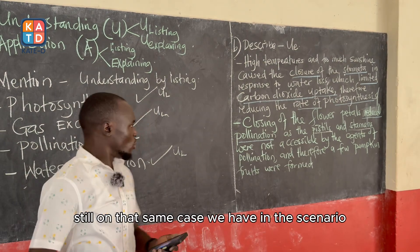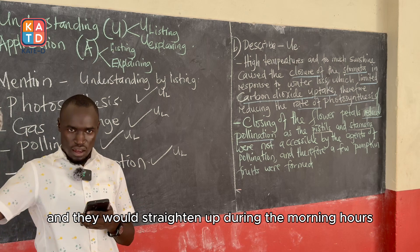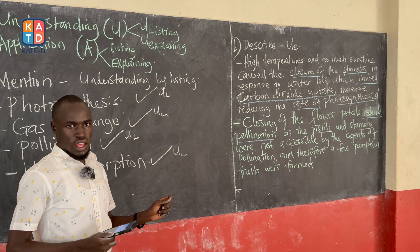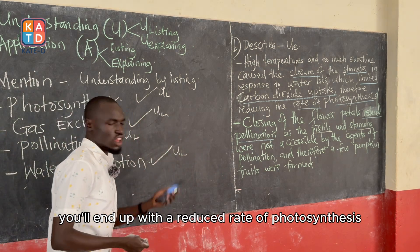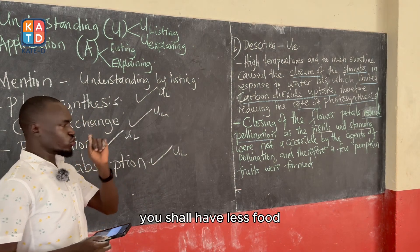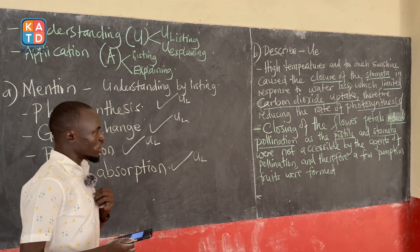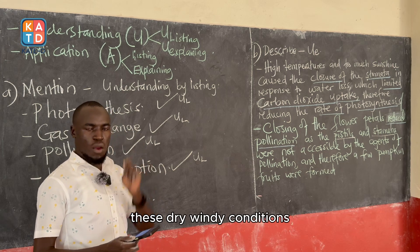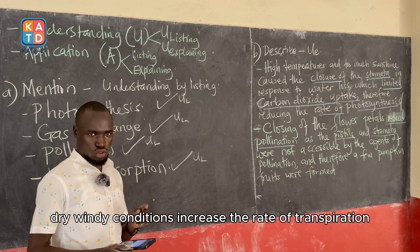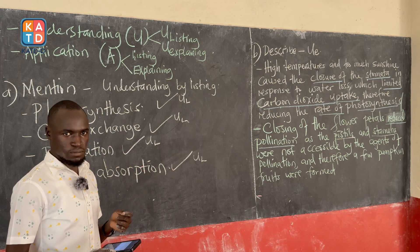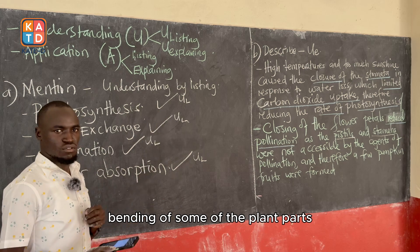They also talked about bending of the leaves during hot days — they would straighten up during the morning hours. Bending of the leaves reduces the surface area for light absorption. Once you reduce the surface area for light absorption, you end up with a reduced rate of photosynthesis. Also, dry windy conditions resulted in increased water loss — dry windy conditions increase the rate of transpiration, and therefore the plant lost a lot of water, which can be responsible for bending of some plant parts.